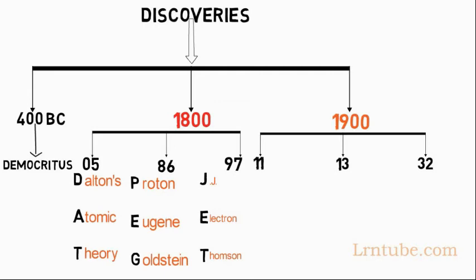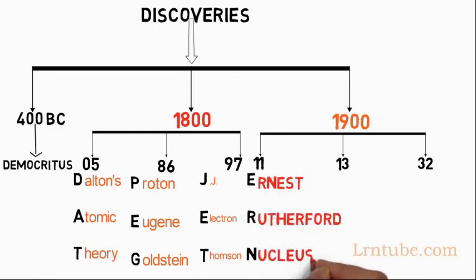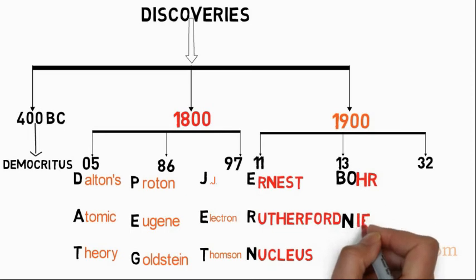In 1911, EARN represents Ernest Rutherford, Nucleus. Ernest Rutherford discovered the nucleus in 1911.